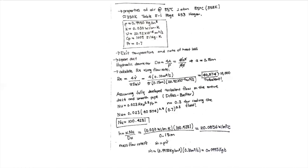A Reynolds number of 40,000 is bigger than 10,000, which means we are dealing with turbulent flow. I'm going to assume we have fully developed turbulent flow — that we are not in the entrance region and there are no entrance effects.